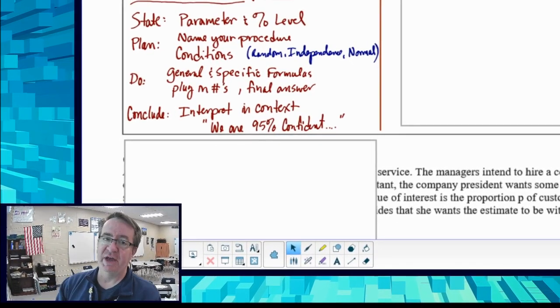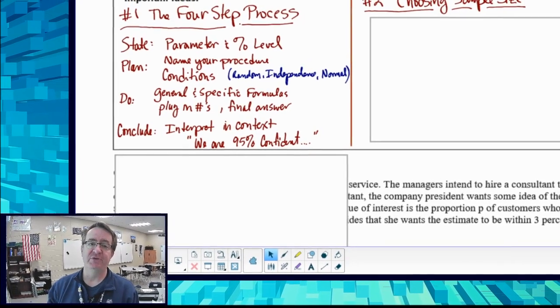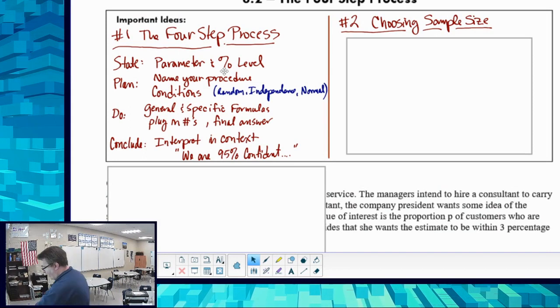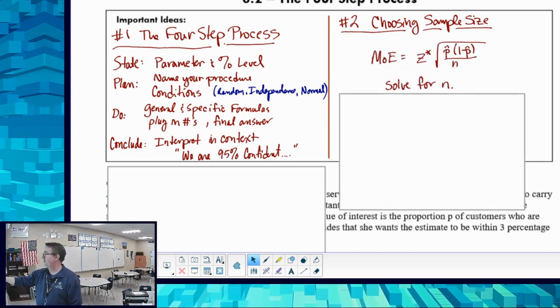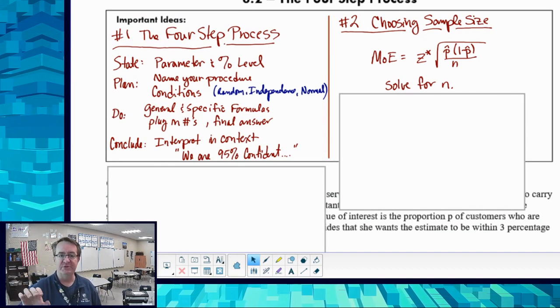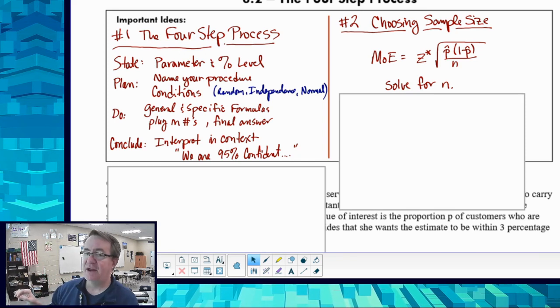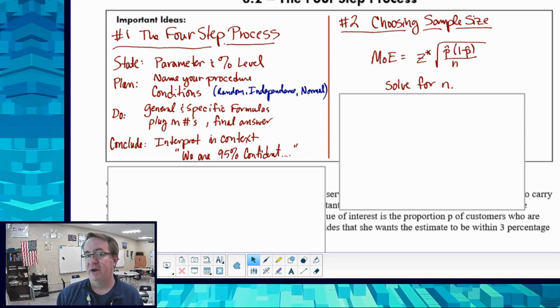Now, choosing your sample size. When polling places are trying to do surveys, they want to have like a plus or minus of 2%. We're going to use this formula here for margin of error. Margin of error is equal to your z star score times the square root of p hat times 1 minus p hat - so success times failure - all divided by n.